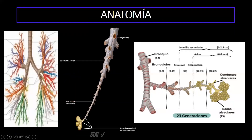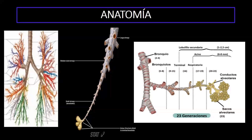No tienen pared cartilaginosa. Estas son unas imágenes para hacer un breve recuerdo anatómico. Como sabemos, los bronquios empiezan a dividirse a raíz de la tráquea: primero la tráquea, luego se divide en bronquio principal derecho e izquierdo, luego en bronquios lobulares y segmentarios, y luego los bronquios terminales. Este gráfico ilustra el tamaño decreciente de los diferentes tipos de la vía aérea, con cambios estructurales de la pared tanto en cantidad y tamaño. El cartílago va a estar presente en la vía aérea grande y mediana, más no en la vía aérea pequeña, la cual va a carecer de cartílago.